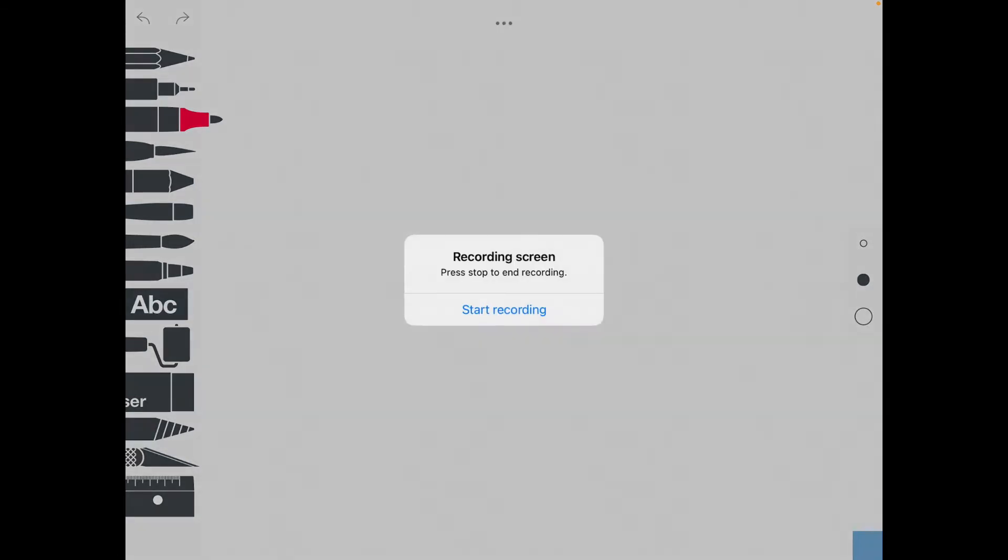To begin the recording process, I'll push the three dots at the top, then select the camera on the right-hand side, and then push start recording.